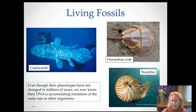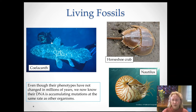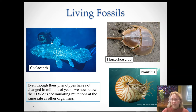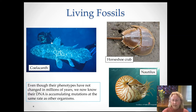Another example is the nautilus, which is a cephalopod. Other cephalopods — squid and octopus — have lost their shell during the course of evolution, so the nautilus is a more primitive kind of cephalopod. They're less abundant than they used to be and are now threatened, mostly harvested for their beautiful shells. But they really haven't changed much for millions of years, like the horseshoe crab.